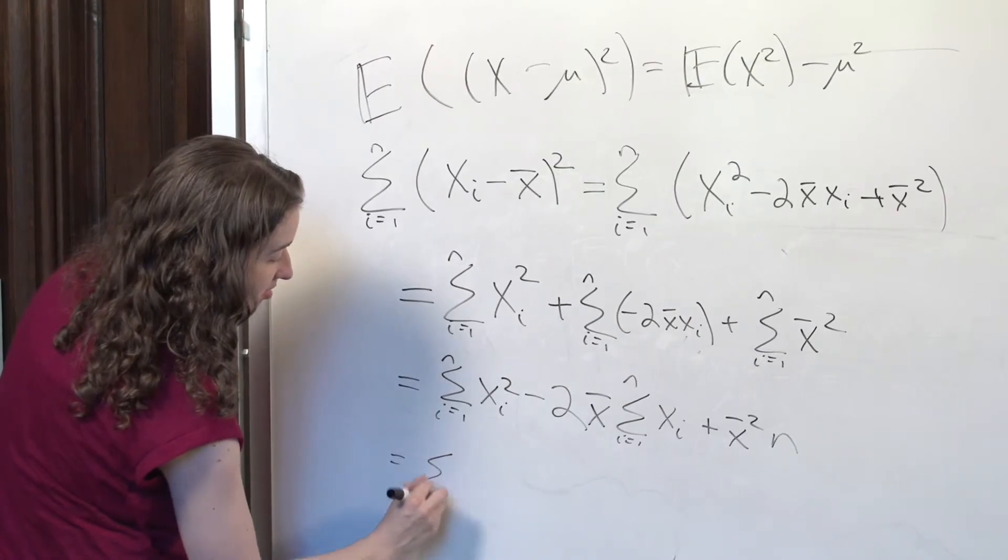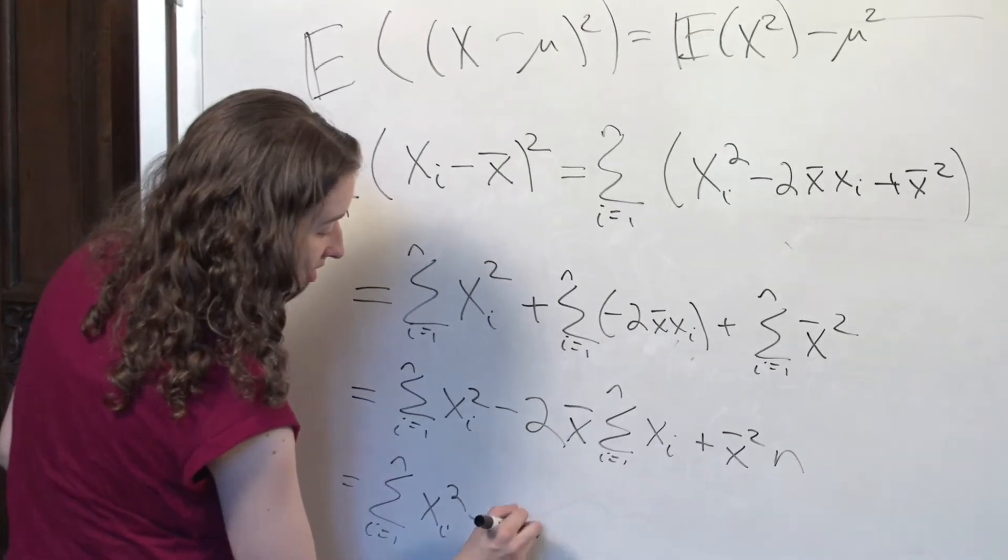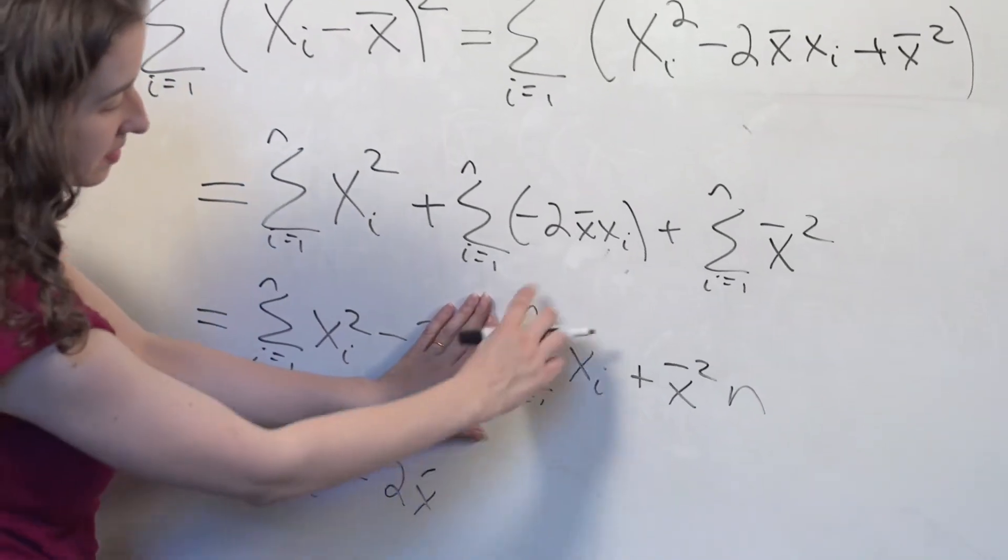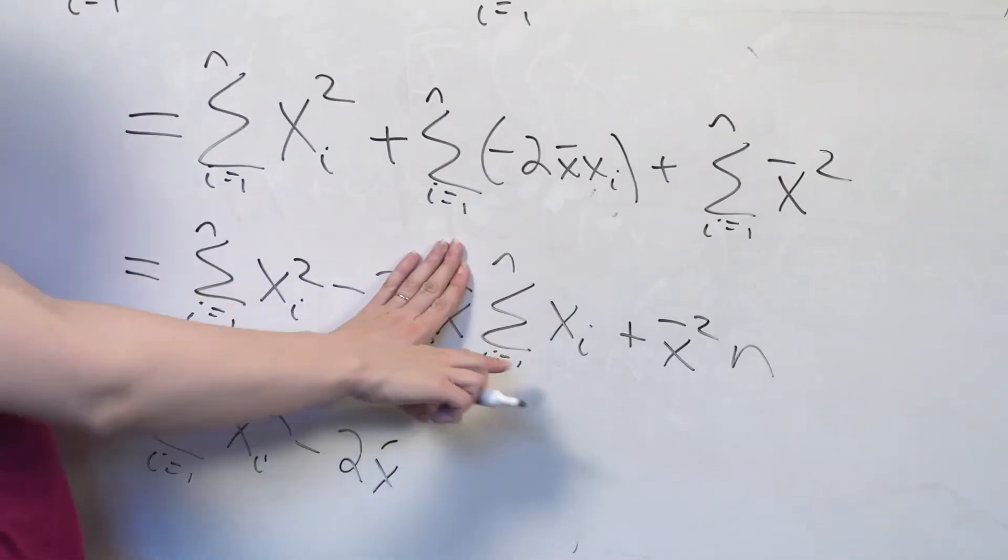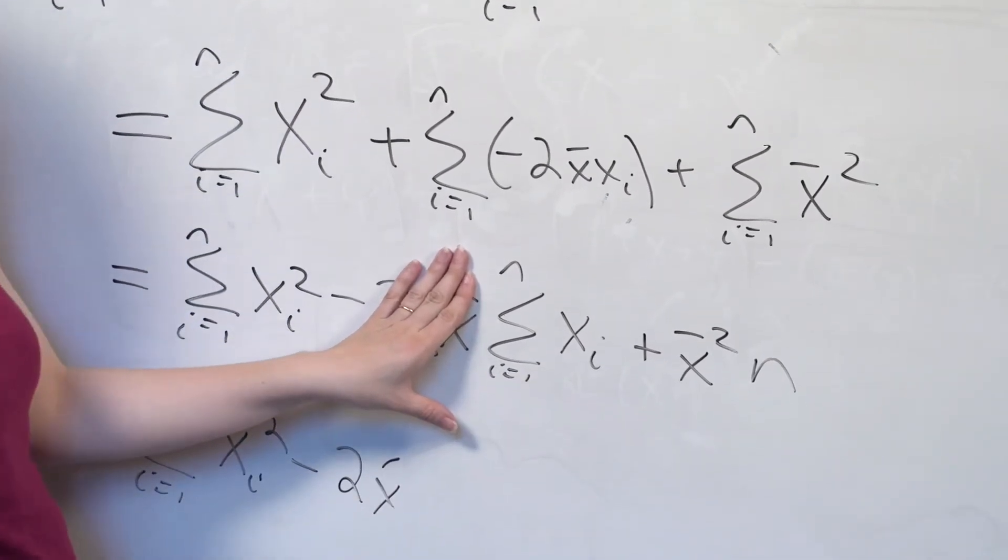So this first term is still here. I've got a negative 2 x bar. So what is this piece right here, the sum of all the xi's in the sample? That's the numerator of the sample mean, right?